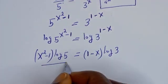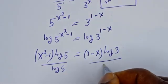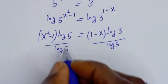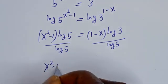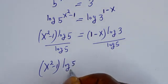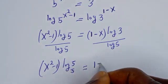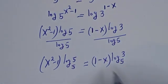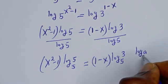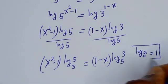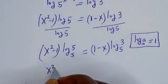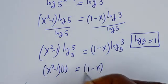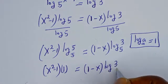Now let's divide both sides by log 5. This gives (s squared − 1) × log₅(5) = (1 − s) × log₅(3). We know that log base a of a equals 1, so log₅(5) = 1. Therefore: s squared − 1 = (1 − s) × log₅(3).